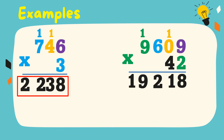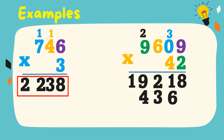Next, we're going to multiply 4 to its digits in our multiplicand. 4 times 9 is equal to 36. Write 6 below 1, regroup 3. 4 times 0 is equal to 0, plus 3 is equal to 3. 4 times 6 is equal to 24. Write 4, regroup 2. 4 times 9 is equal to 36, plus 2 is equal to 38.